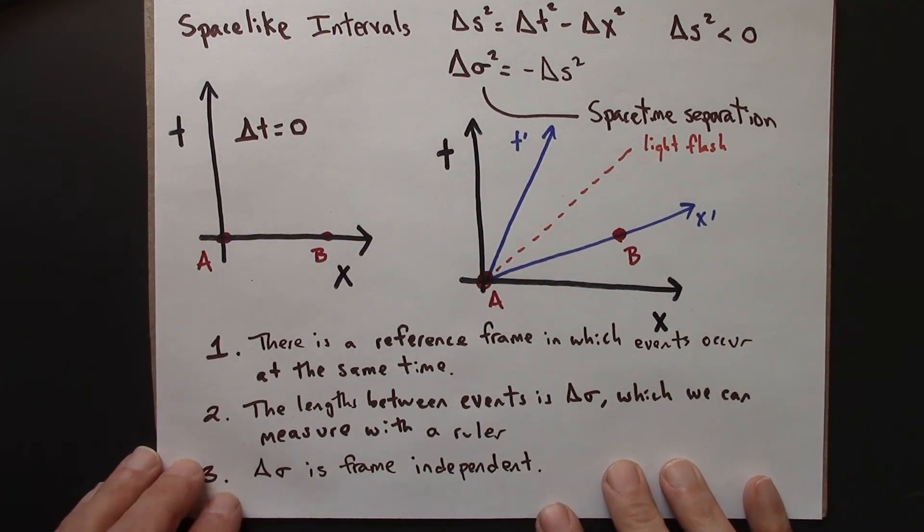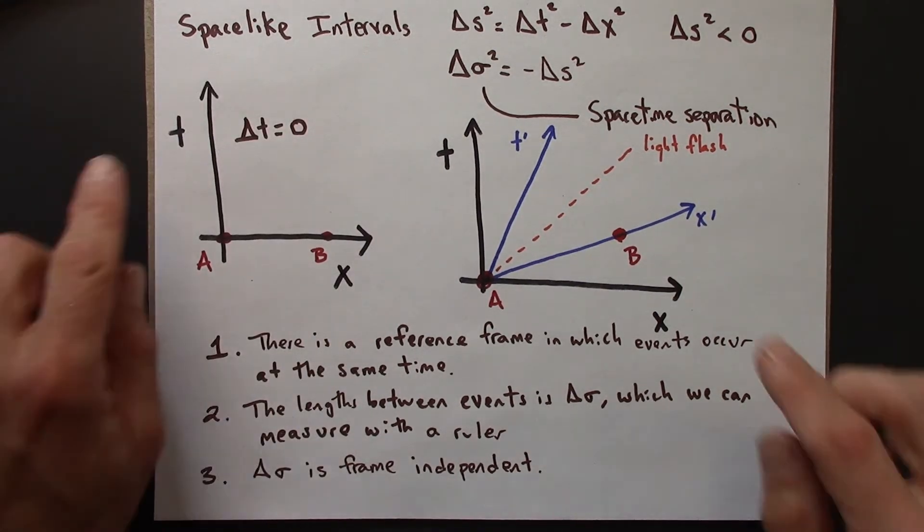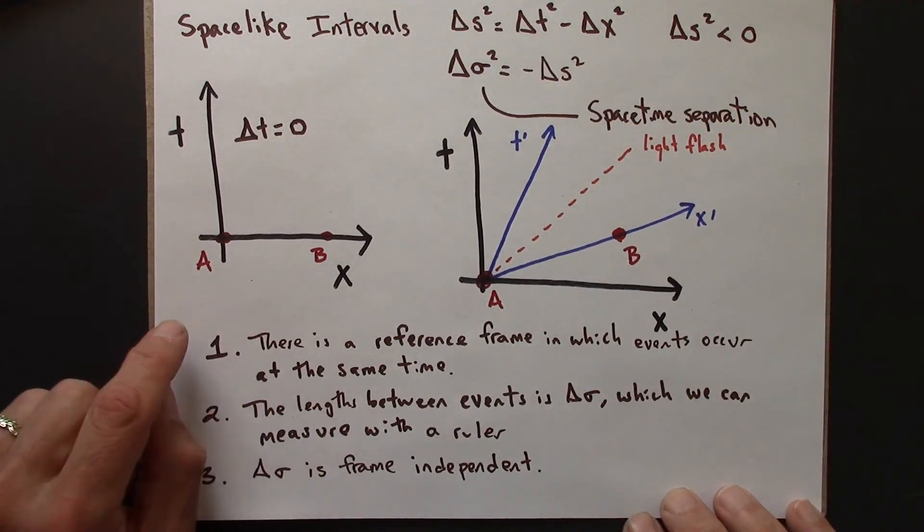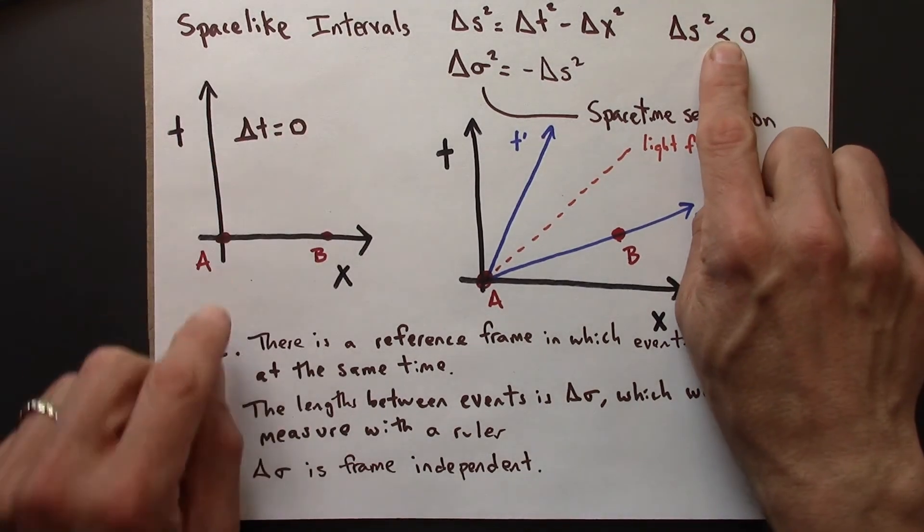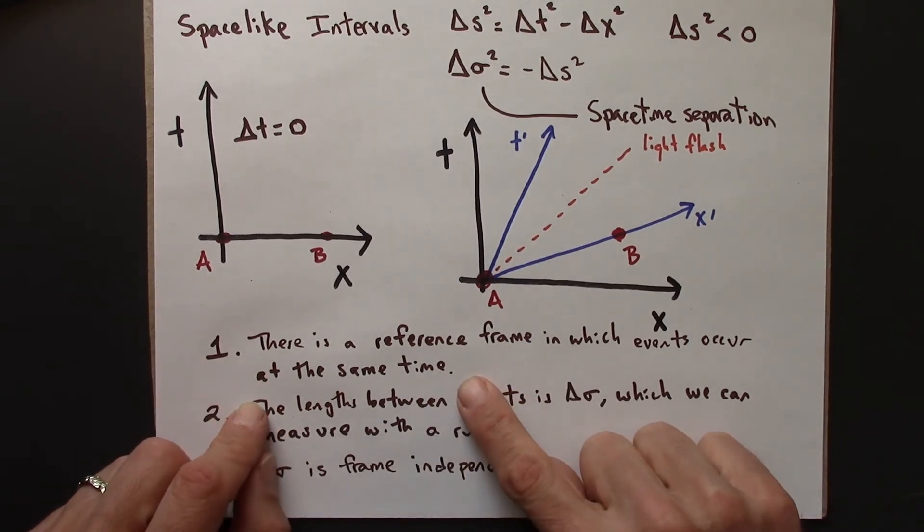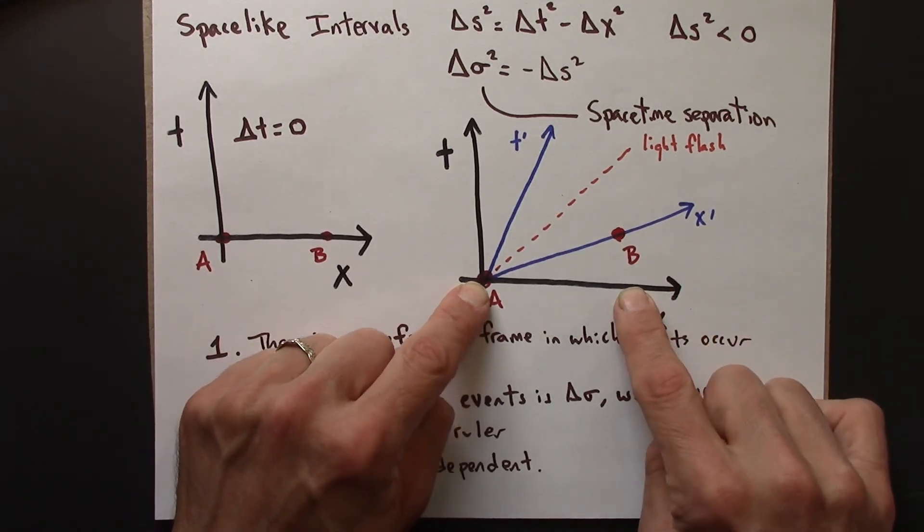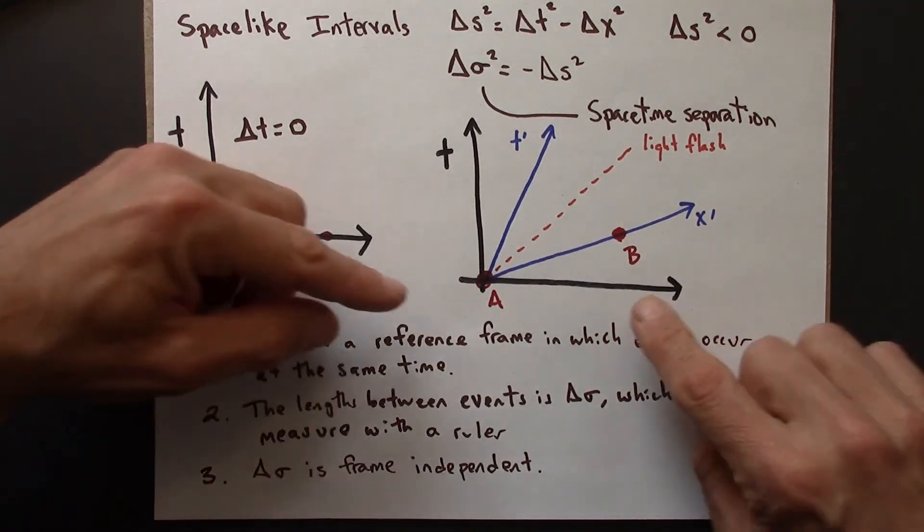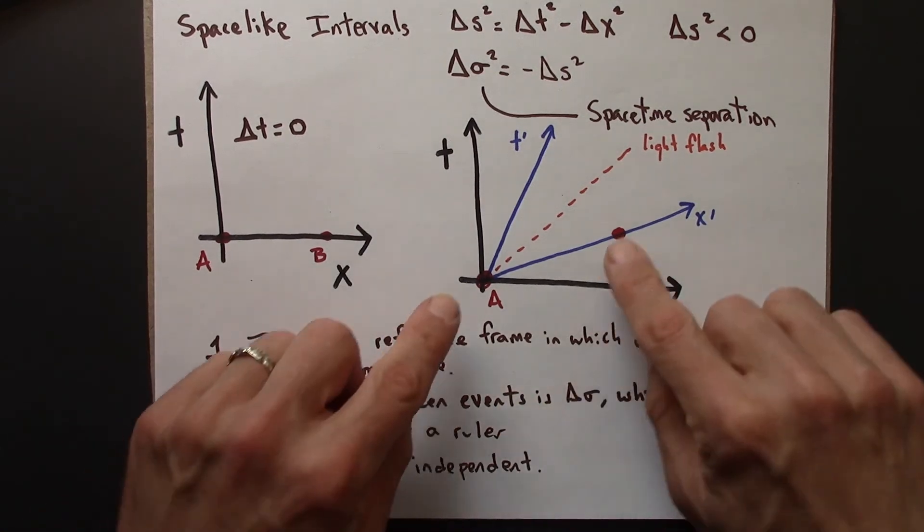So let's summarize the main features of spacelike intervals. So again, spacelike intervals refer to the interval between two points in spacetime, two events in spacetime, and if that interval is spacelike, meaning this is negative, then that means there's a reference frame in which those two events occur at the same time. So here are two events. In the unprimed frame, they're not simultaneous, but I can find a frame in which they are simultaneous. And so then in this frame, in this special frame, the length between those events is just delta sigma.